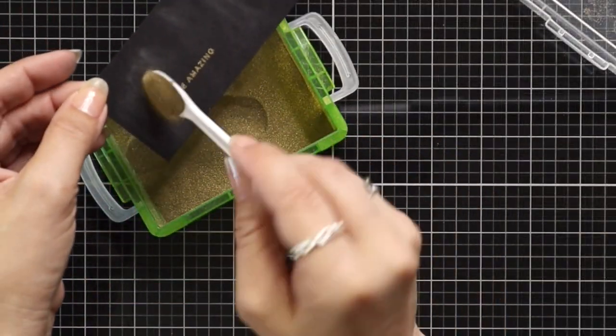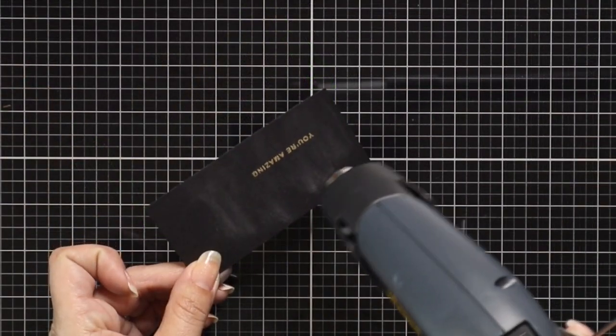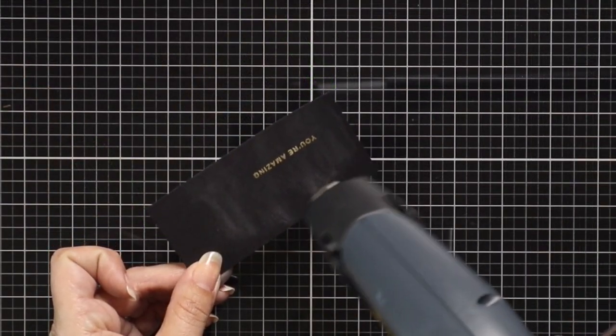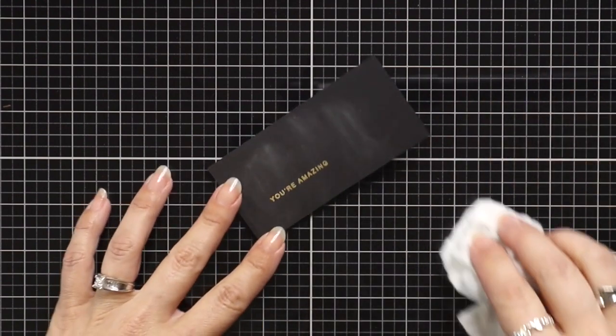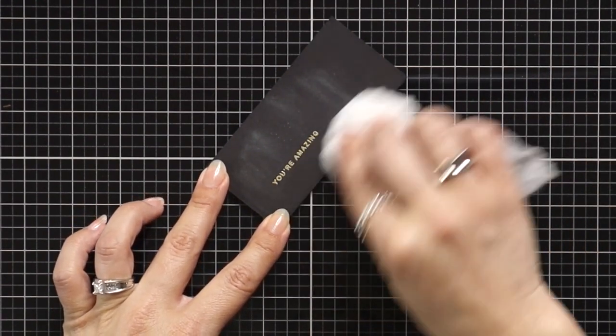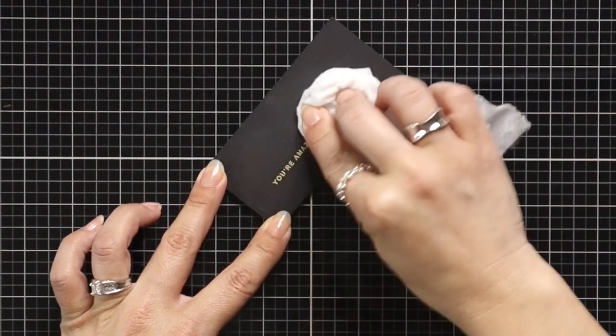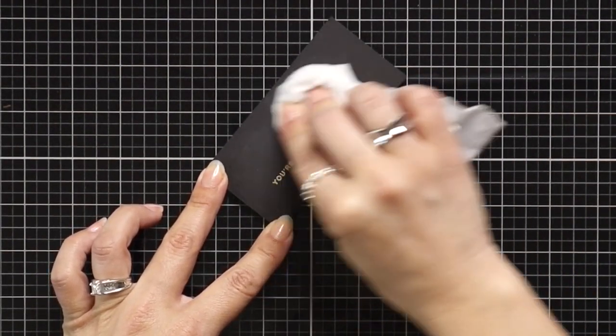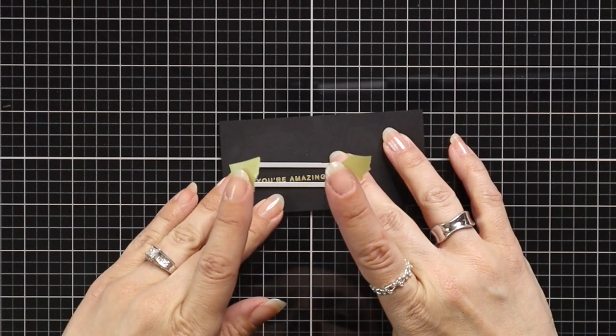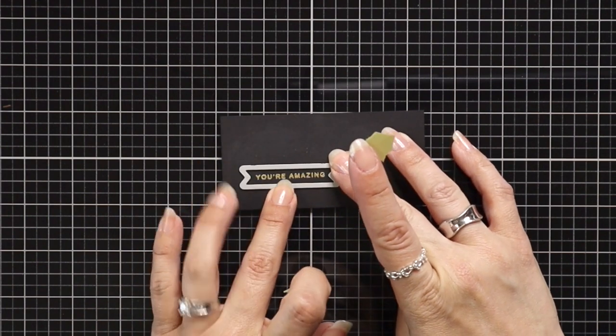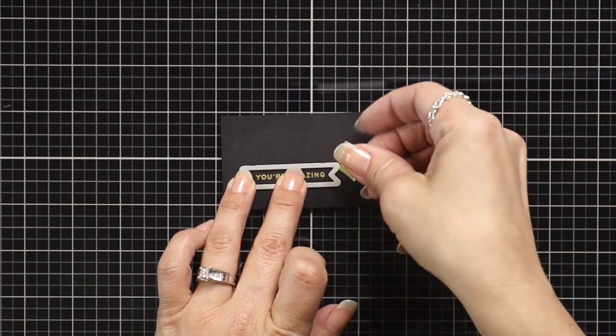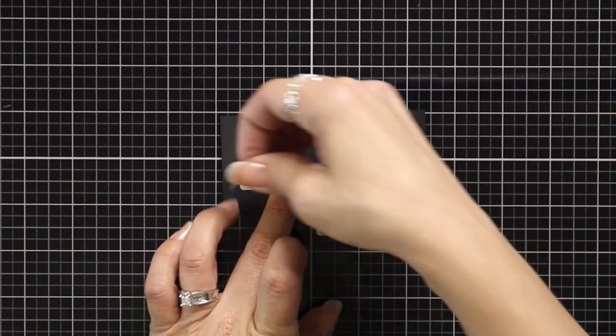Next I'll sprinkle on some gold embossing powder, tap off any of the excess and then after my heat gun is nice and hot I'm going to melt that embossing powder. After this has cooled down for about a minute or so I'm going to take a Swiffer cloth and just dust off any of that excess powder and help that black really pop. Then I'm going to take a small banner die off of the Master Layouts 3 stamp set and line that up over my sentiment.